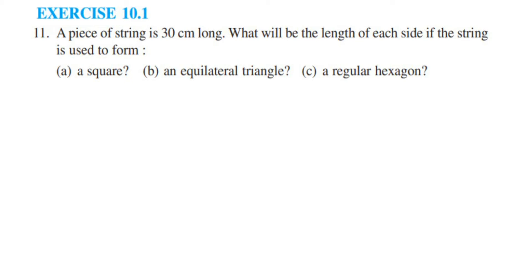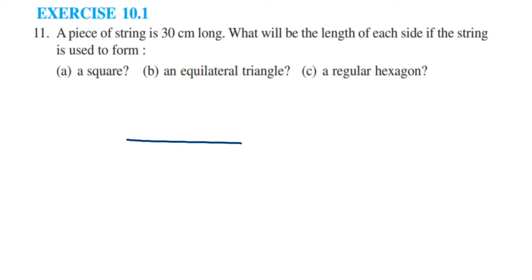Here I am doing exercise 10.1, question 11, chapter on mensuration. The question is: a piece of string is 30 cm long. What will be the length of each side if the string is used to form a square, an equilateral triangle, and a regular hexagon? They have given that a string of length 30 cm is used to make three different shapes: a square, an equilateral triangle, and a regular hexagon.